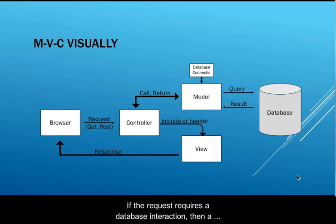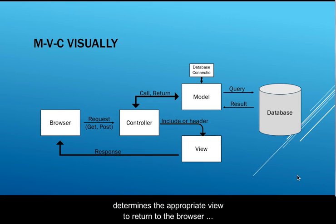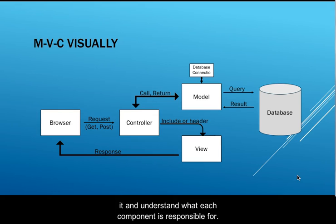If the request requires a database interaction, then a function that resides in the model is called, and the results of the interaction are returned from the model function to the controller. The controller then determines the appropriate view to return to the browser to inform the site visitor of the result of their request. This diagram is key to understanding the working of the MVC pattern — I encourage you to memorize it and understand what each component is responsible for.